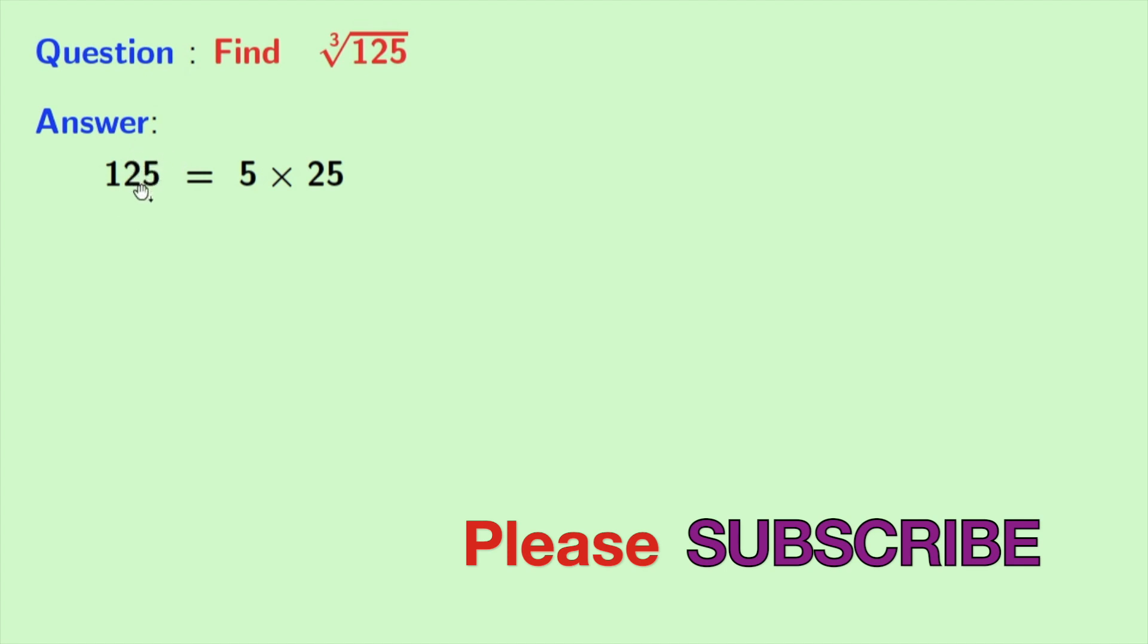It can be written as 5 times 25. Now again we know that 25 is equal to 5 times 5, so we have 125 equal to 5 times 5 times 5.